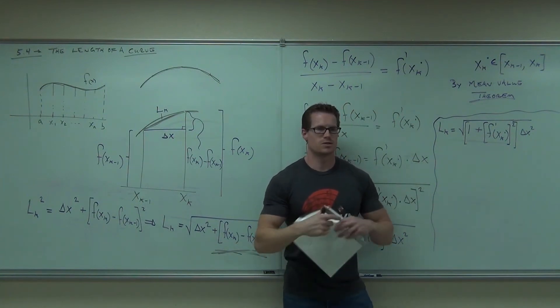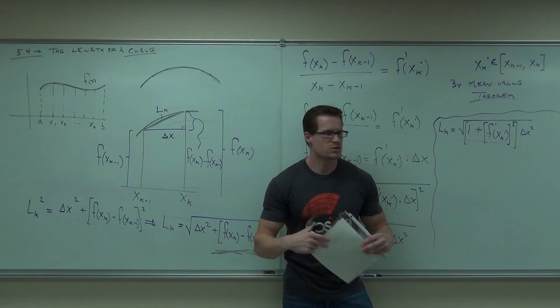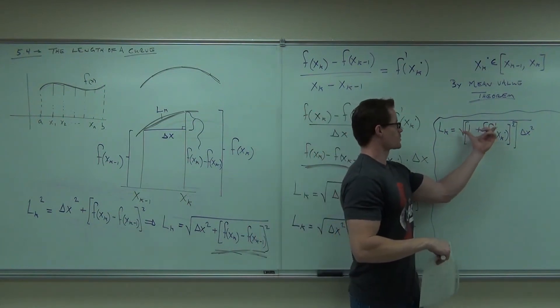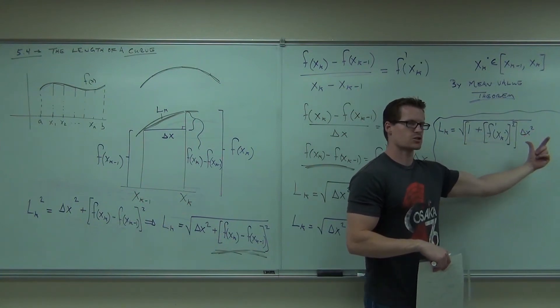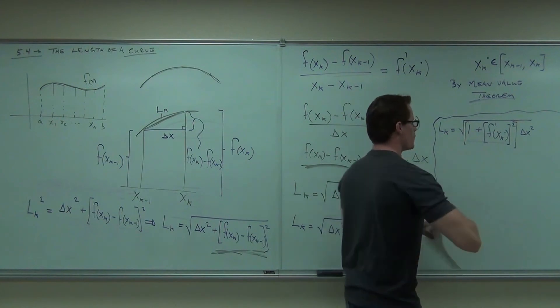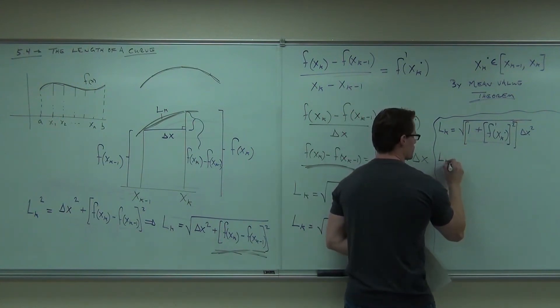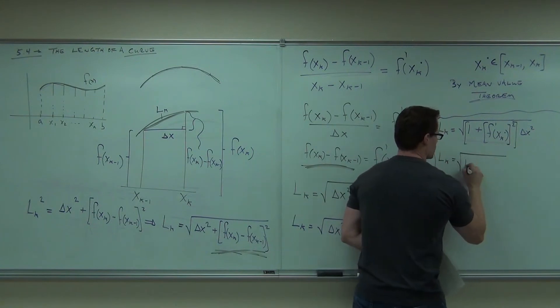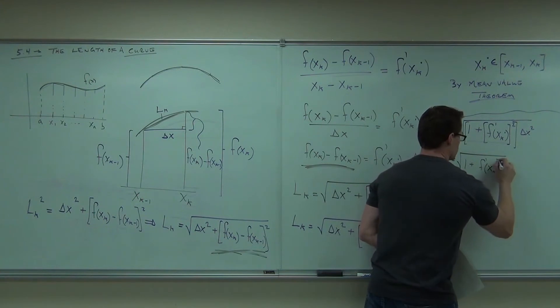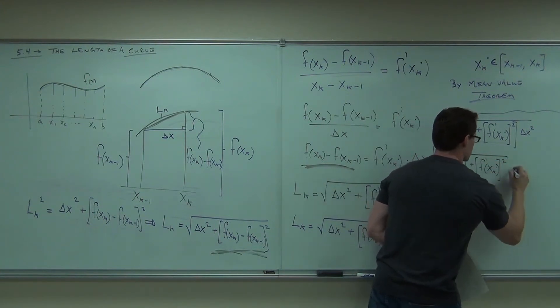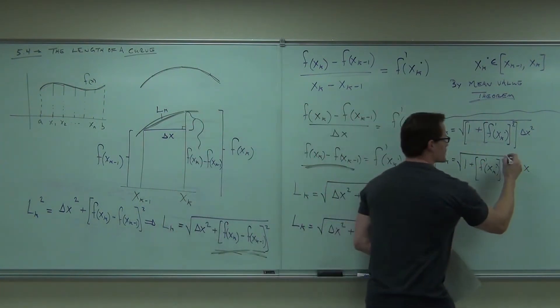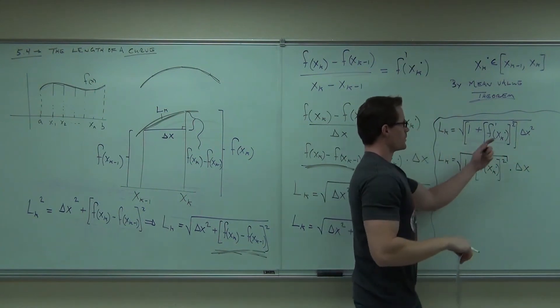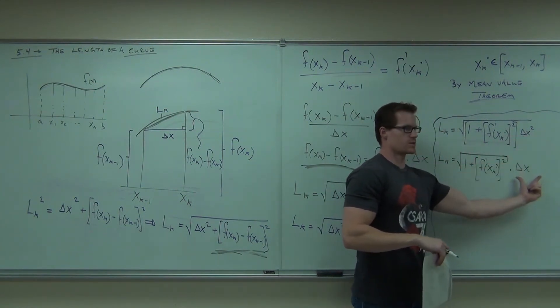Now, roots are kind of awesome because you can split them apart by multiplication. So do you see that I can have a square root of this first thing times a square root of the second thing? But a square root of delta x squared will give you just delta x. So the next step is going to be L sub k. Notice how I'm putting the stop after the square root right there. We take the square root of delta x squared and it becomes delta x.